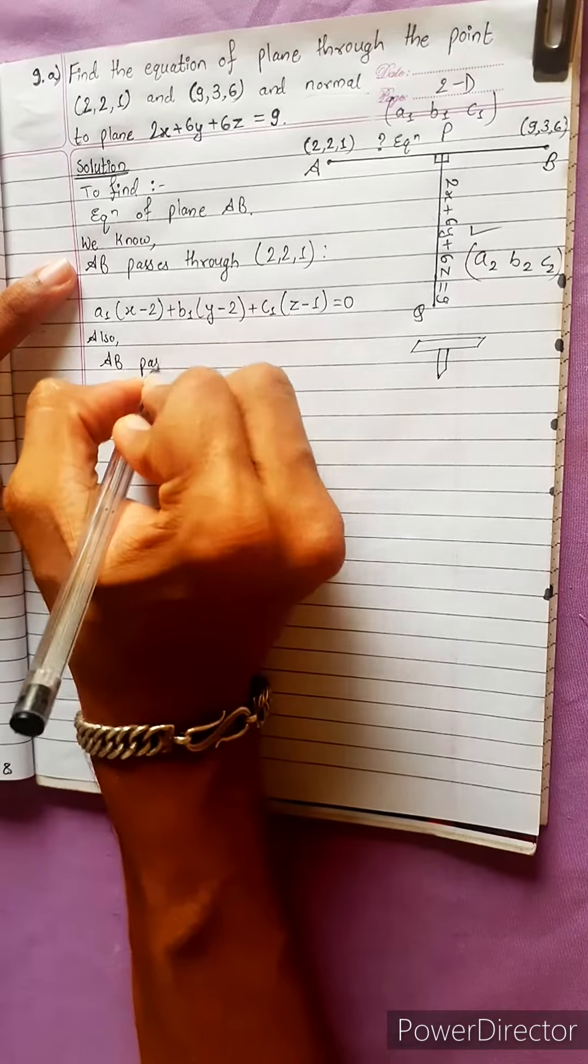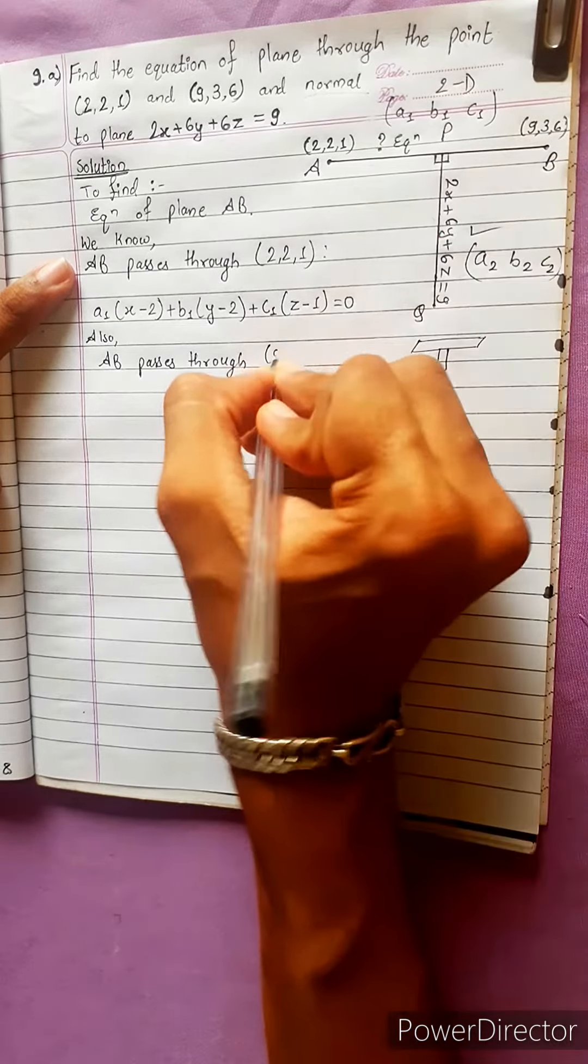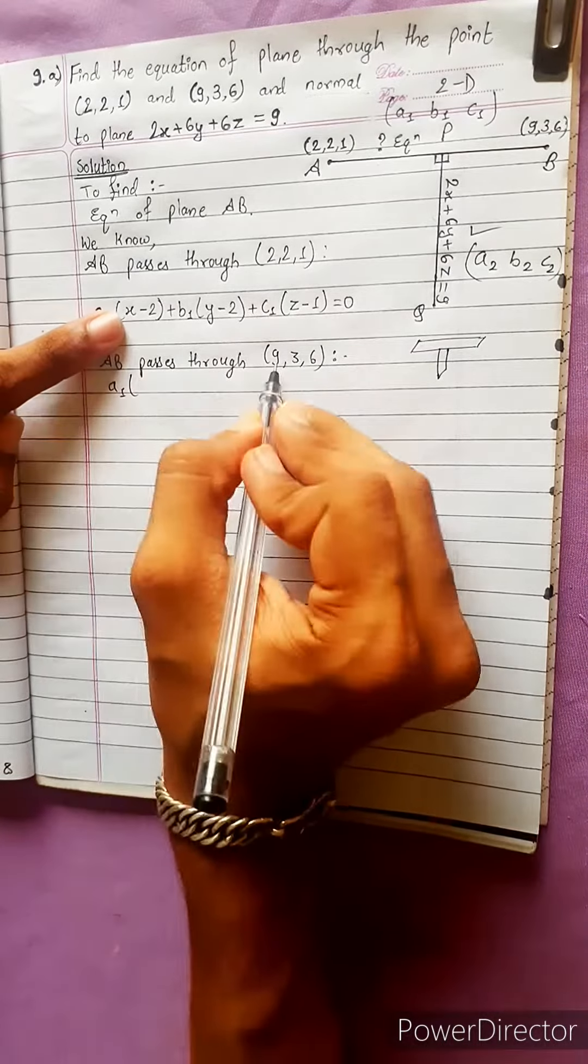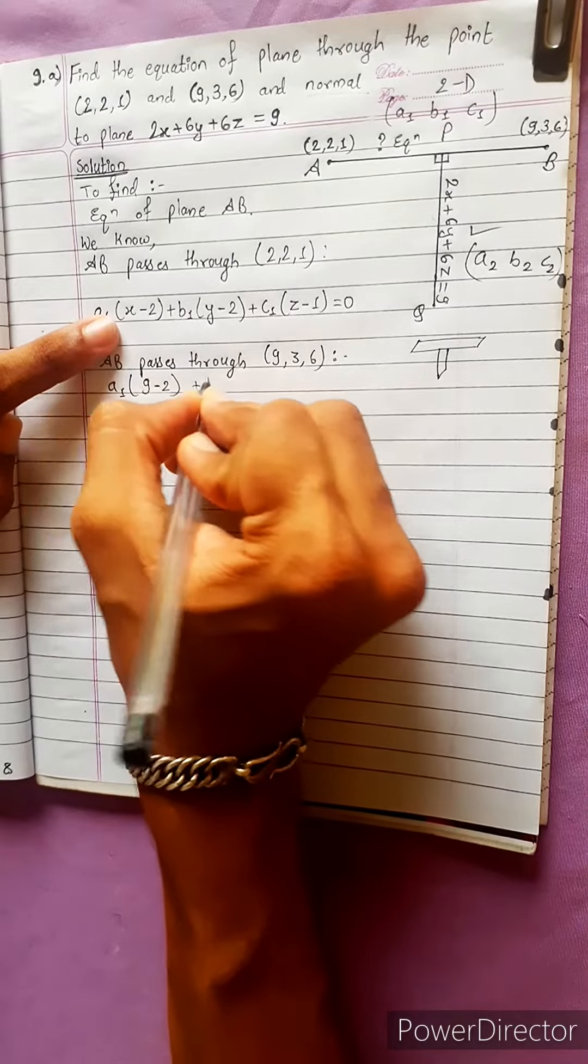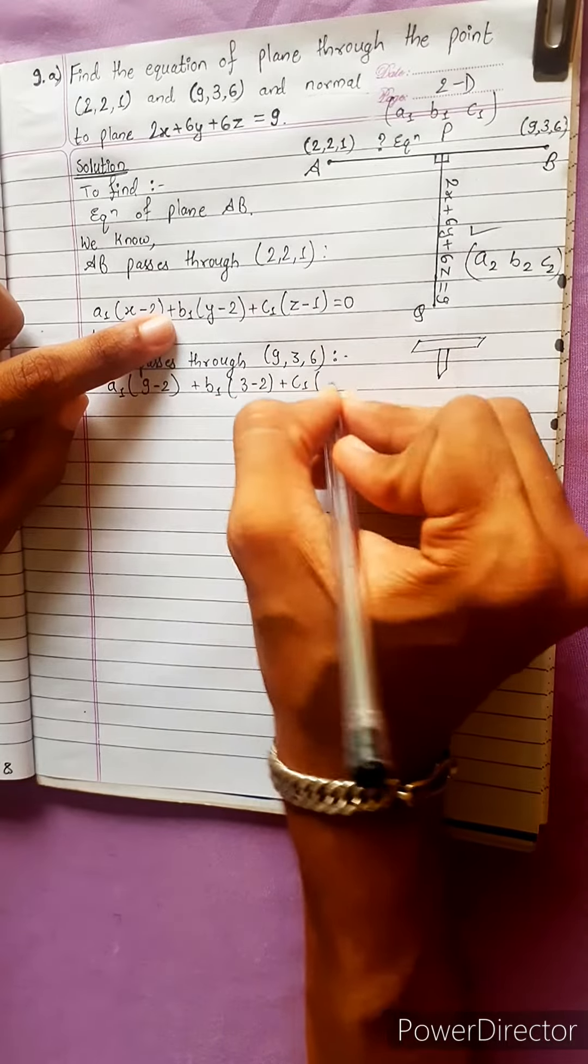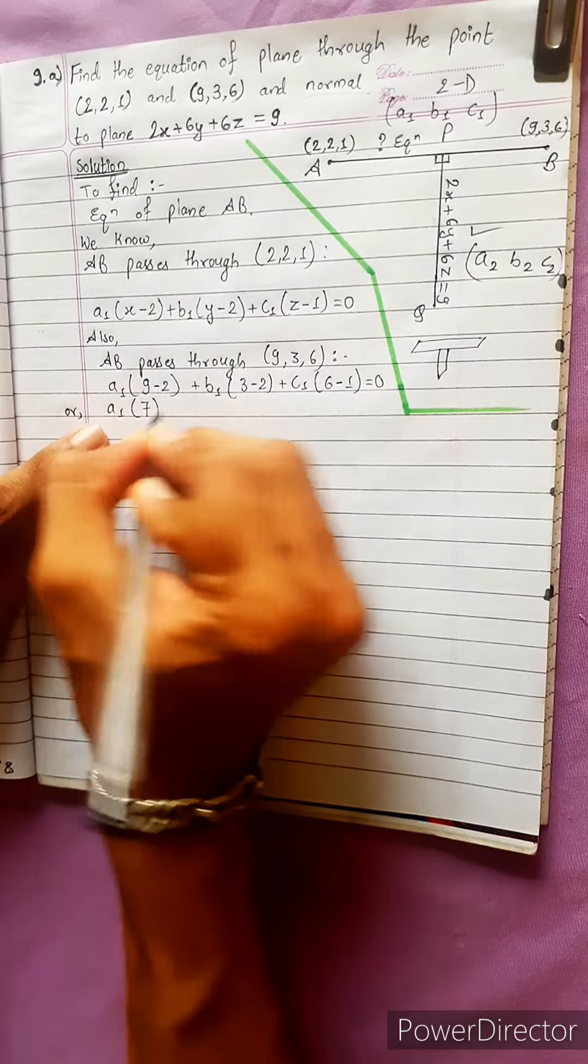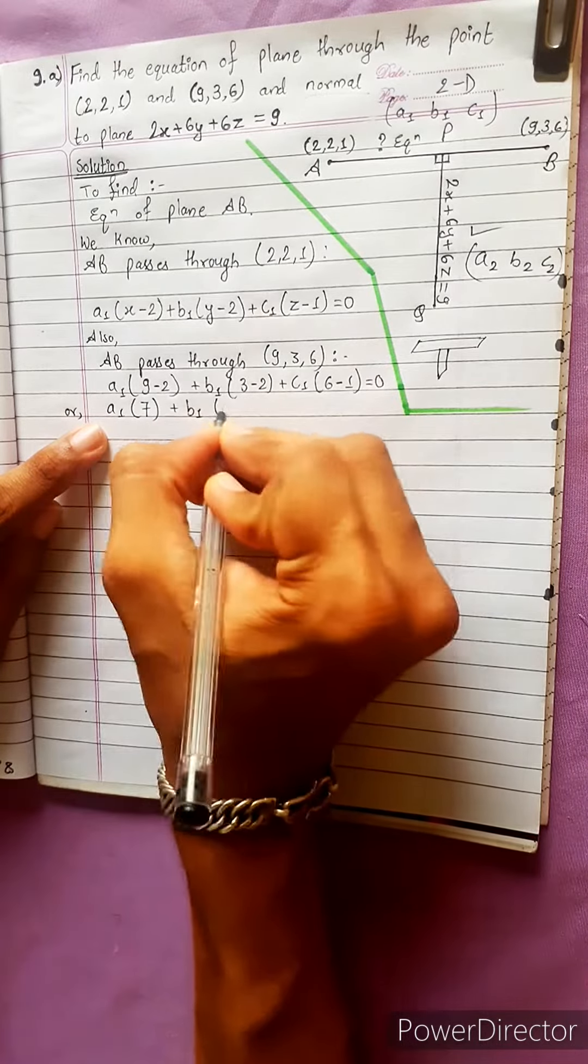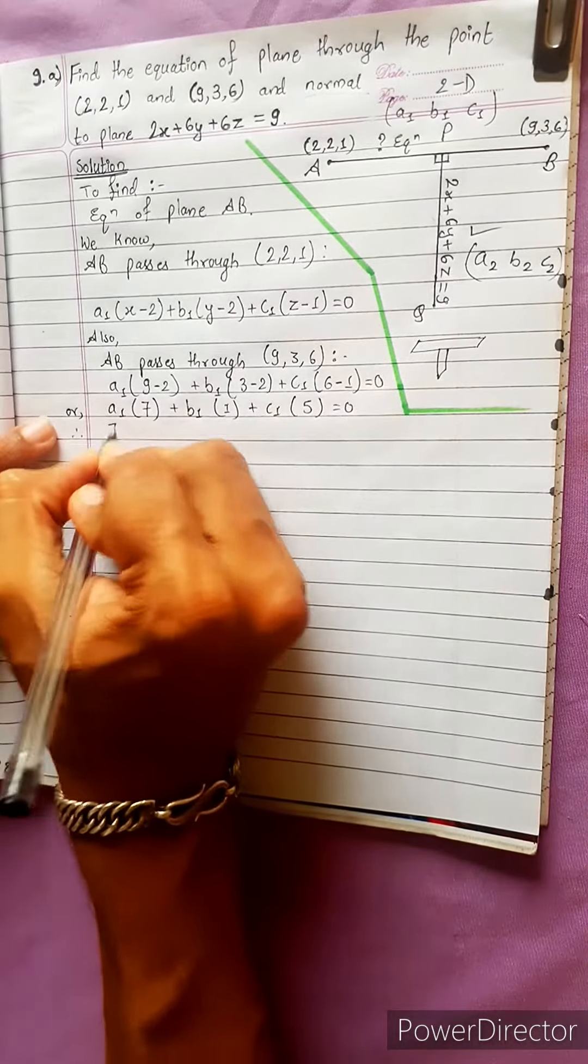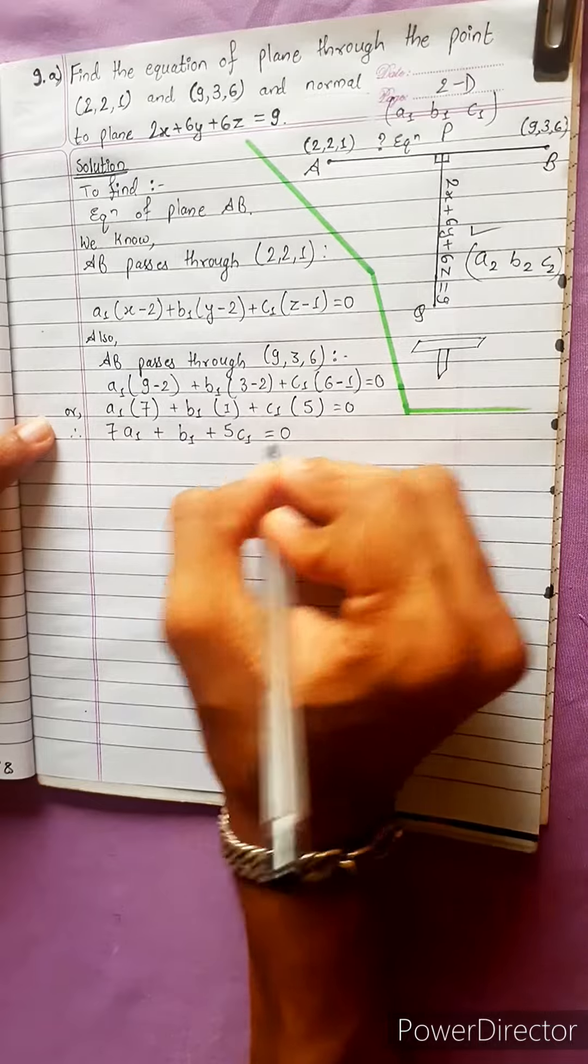The point that passes through is (9, 3, 6). Now, for x we get value 9 minus 2, plus b1 times y which gives 3 minus 2, plus c1 times z which gives 6 minus 1 equals 0. This gives a1 into 7 plus b1 into 1 plus c1 into 5 equal to 0.